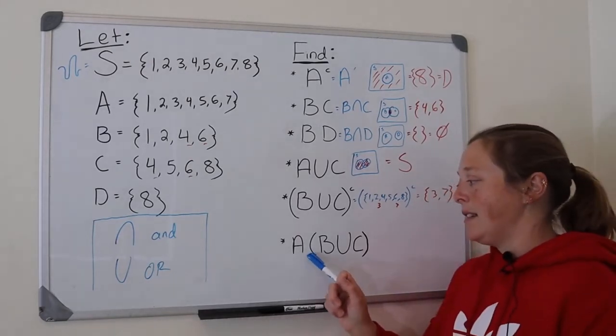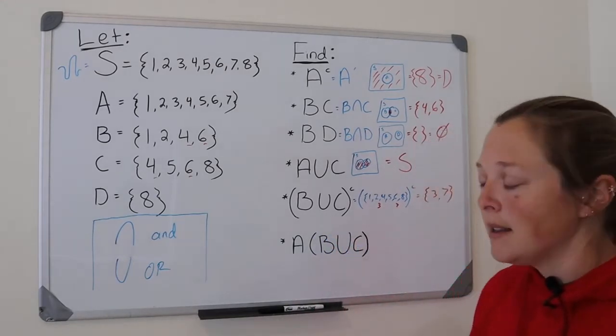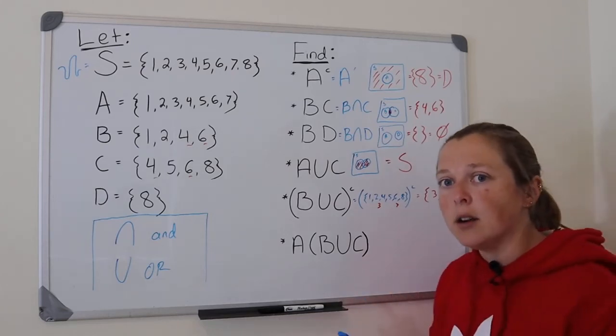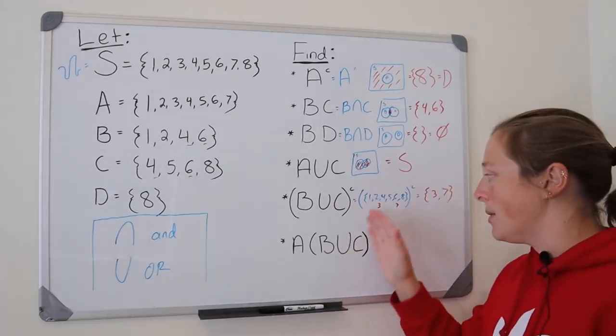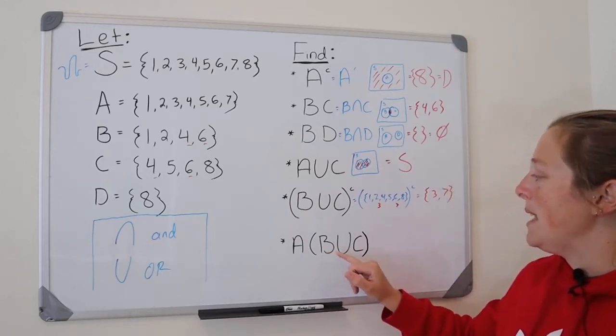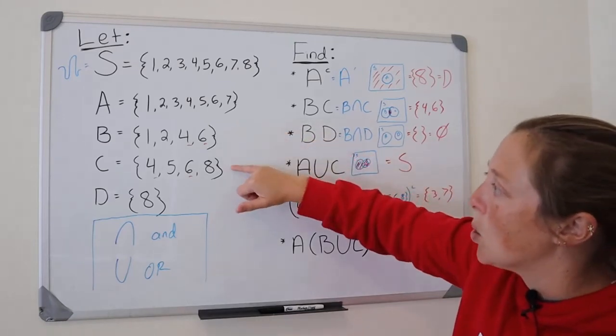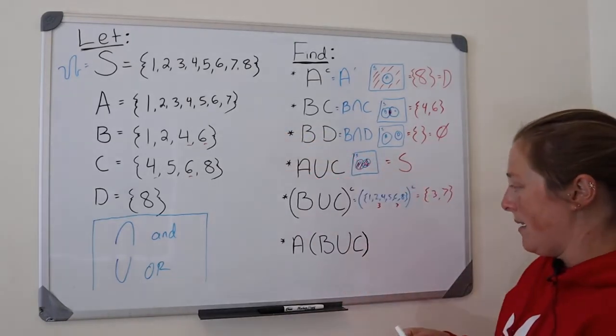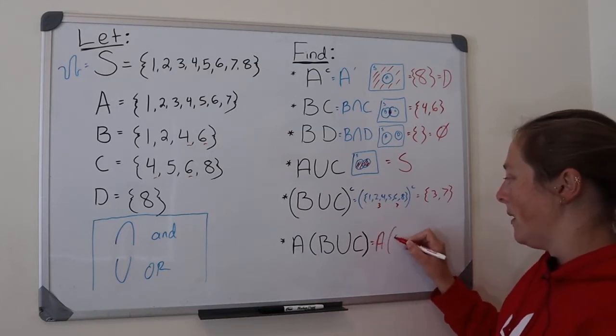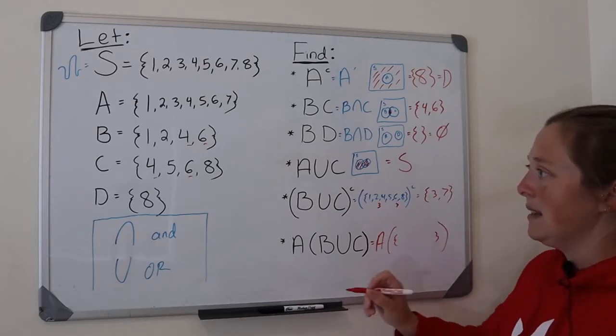Now what about A intersection B union C? It's looking a little more complicated, a little more difficult, but if we just take it slow, we can get there. Start with what's inside the parentheses. So I have B intersection C. So it's B or C. Let's start with that. So I'm going to leave A out here. And I'm going to figure out what B intersection C is.